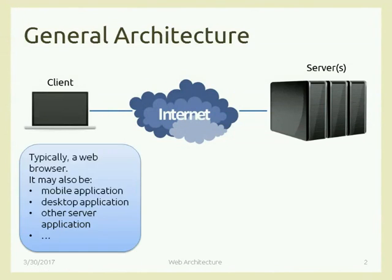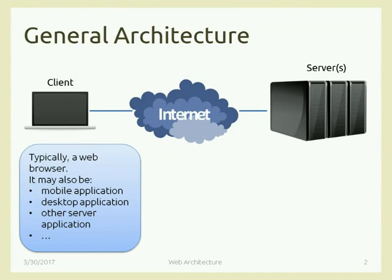The client is typically a web browser, but it may also be a mobile application — maybe an app that uses some content to show information. The Facebook mobile app uses web content because Facebook is on the web. You have a local application, but the content is fetched from the Internet. Also a desktop application or other server applications that require other data — you can have a server that asks another server for information.